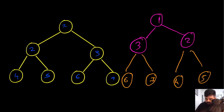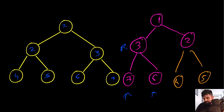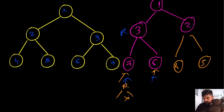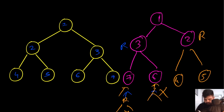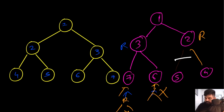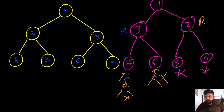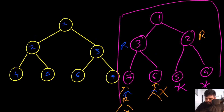Next, we treat node 3 as the root and repeat the process with its children 6 and 7 — inverting them. Then we treat node 7 as the root — it has no children, so nothing to flip. Same for node 6 — no children, so we skip. Then we treat node 2 as the root — it has children, so we swap their values. After that, nodes 5 and 4 have no children, so we can't do anything further. In the end, we return the root value and we have successfully inverted the entire tree recursively.